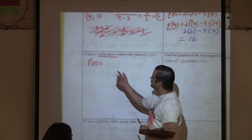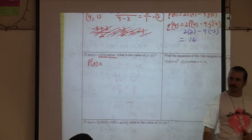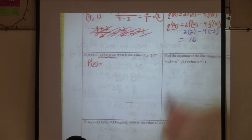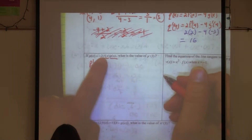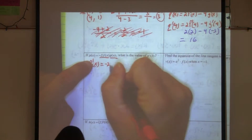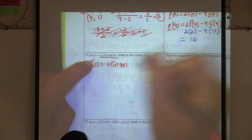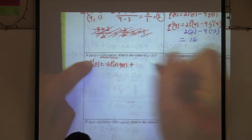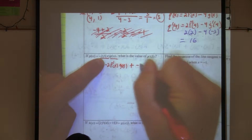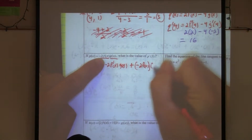Let's keep the negative two together with the first function, and then this will be the second one. Using the product rule: derivative of the first — negative two f prime of x — times the second, g of x, plus the first, negative two f of x, times the derivative of the second, g prime of x.